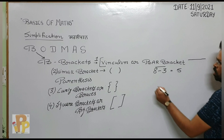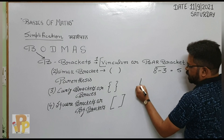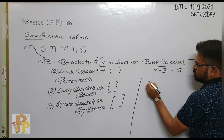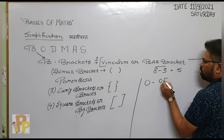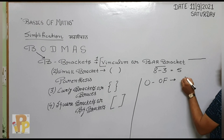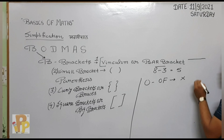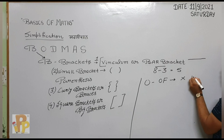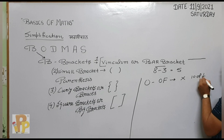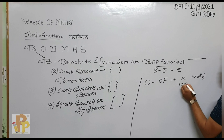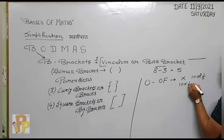Now next word है आपका — O. That is OFF. OFF that implies multiplication. जैसे 10 of 1 by 5 — तो आप क्या mention कर दोगे? 10 into 1 by 5, and that gives 2.